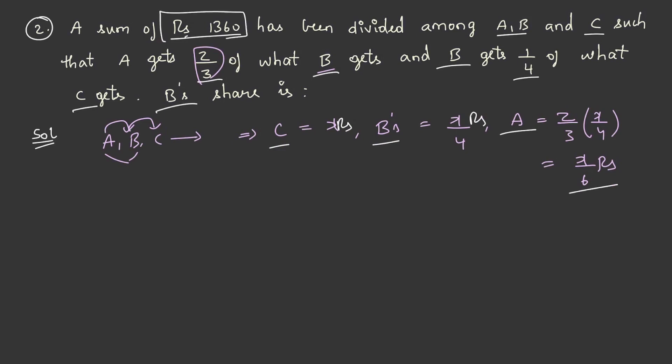Now a sum of rupees 1360 has been divided among A, B and C. Therefore, x by 4 plus x by 6 plus x is equal to rupees 1360. We shall take the LCM and we get 17x by 12 is equal to 1360.